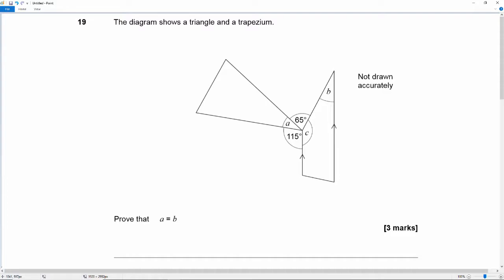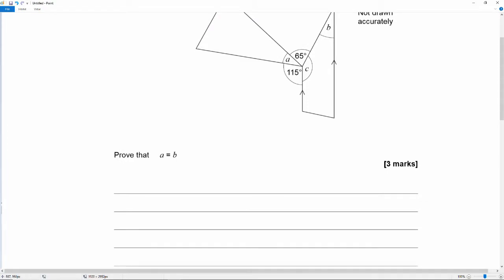Alright, I see this. So the first thing we can say is that we've got a circle here. We've got angles around the point which add up to 360 degrees. So we can say that A plus B, sorry, plus C plus 65 plus 115 is equal to 360. There's 360 degrees in a full circle.